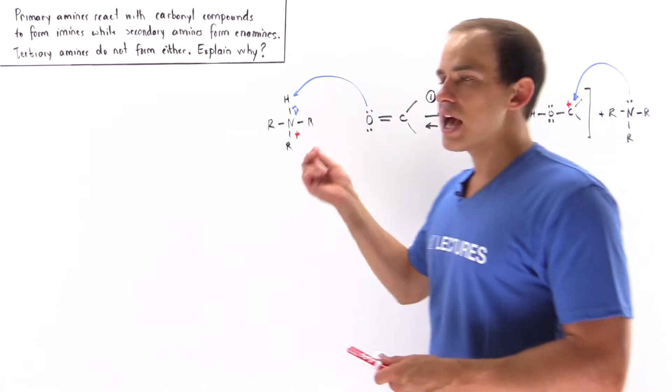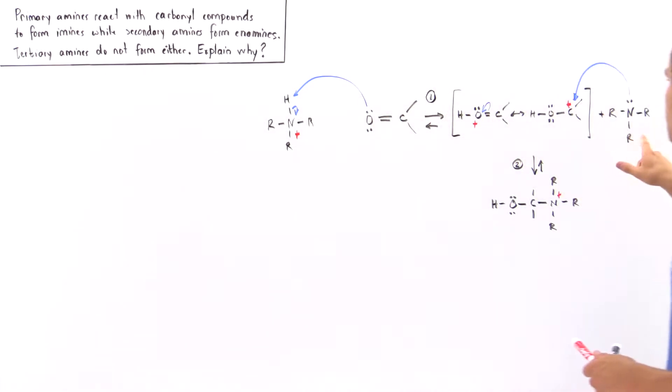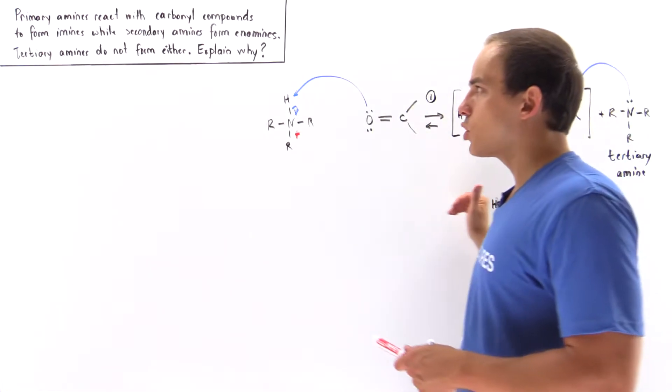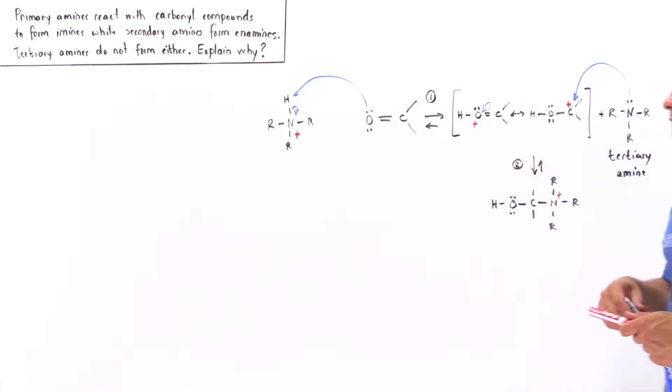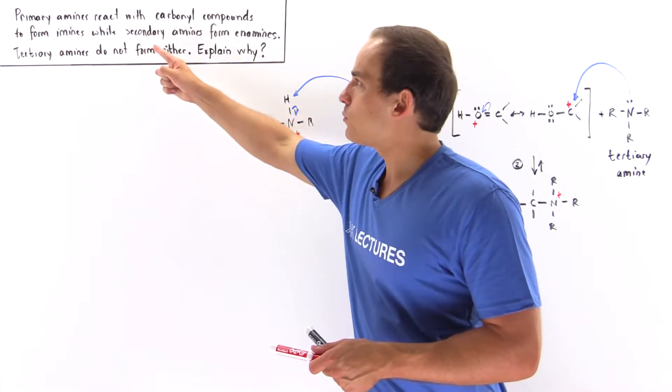So we see that the reason we do not form the imine or the enamine with the tertiary amines is because this tertiary amine does not actually have a spare H atom that is attached to our nitrogen. And because of that fact, we cannot take off any H atoms to undergo the deprotonation step as we do in the imine and the enamine formation. So this is why, if we instead of using our primary, secondary, use a tertiary amine, no product is actually formed.